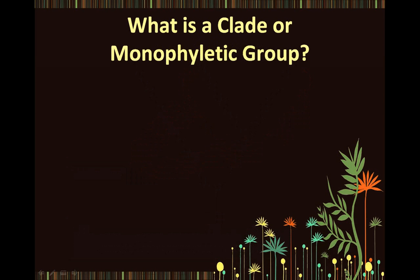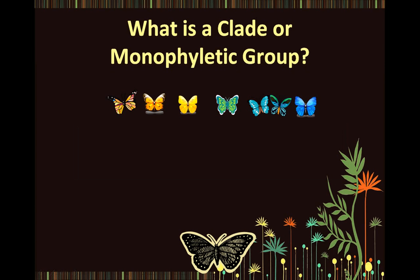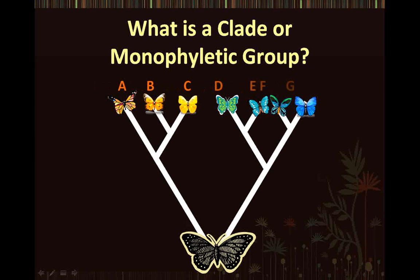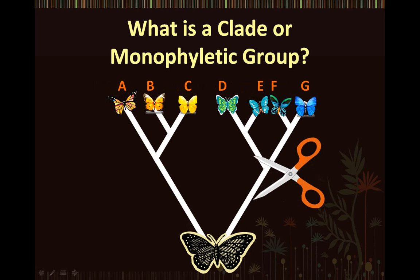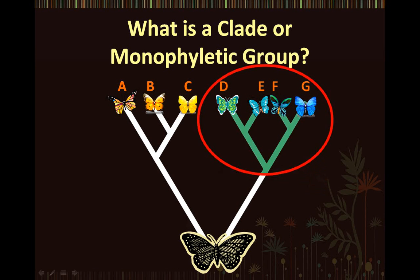This brings us to the question: what is a clade or monophyletic group? A clade, also known as a monophyletic group, is a group of organisms composed of an ancestor and all of its descendants. Let's consider the following cladogram with daughter species of butterflies, arbitrarily labeled A, B, C, D, E, F, and G. If we cut off the tips containing butterflies D, E, F, and G, we will notice that those butterflies represent a clade or monophyletic group.